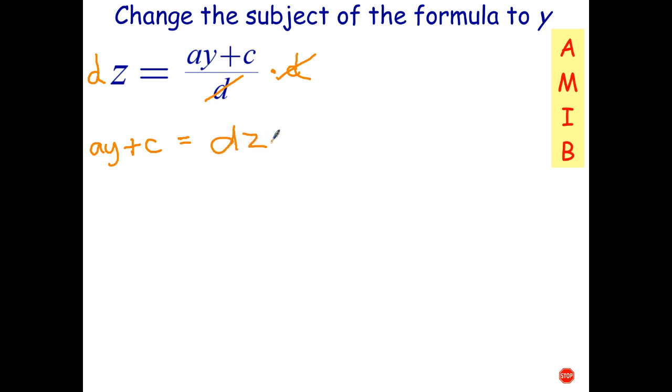So I'll write AY plus C equals DZ. Okay, so I've undone one step. Now here I have a multiply and an add. The order of operations as we undo adding and subtracting, so I have to subtract C from both sides.